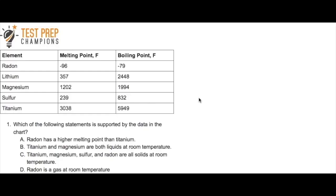First question here: which of the following is supported by the data in the chart? Radon has a higher melting point than titanium; titanium and magnesium are both liquids at room temperature; titanium, magnesium, sulfur, and radon are all solids at room temperature; or radon is a gas at room temperature.